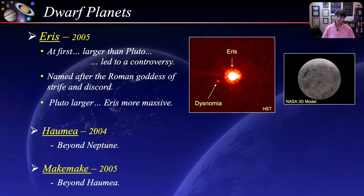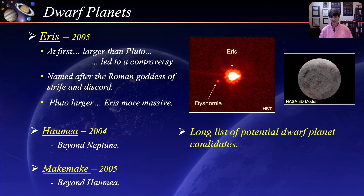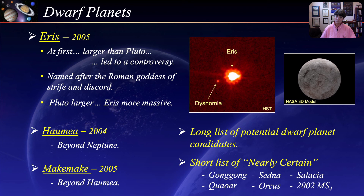Many more bodies have been discovered, and there is a long list of potential dwarf planet candidates as well as a very short list of nearly certain ones. These are all beyond the orbit of Neptune, which brings us to our next topic.